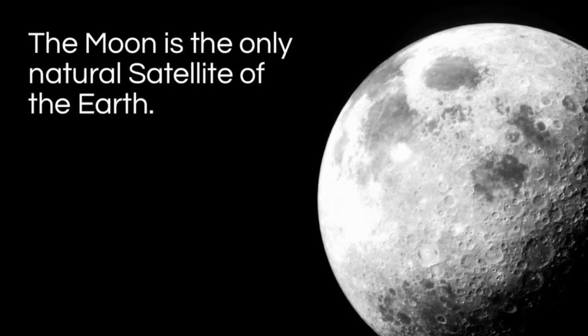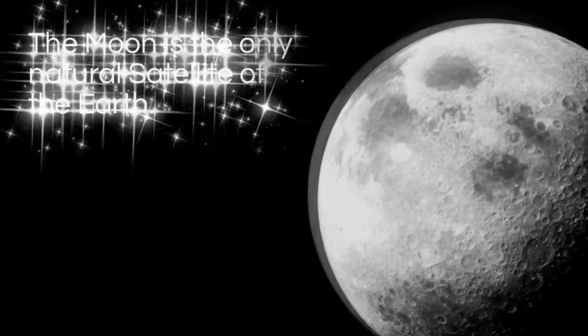The Earth has one such object. The reason we need to use the word natural is because there are literally thousands of man-made satellites also orbiting the Earth. The moon, of course, being a naturally existing object, is our only natural satellite.